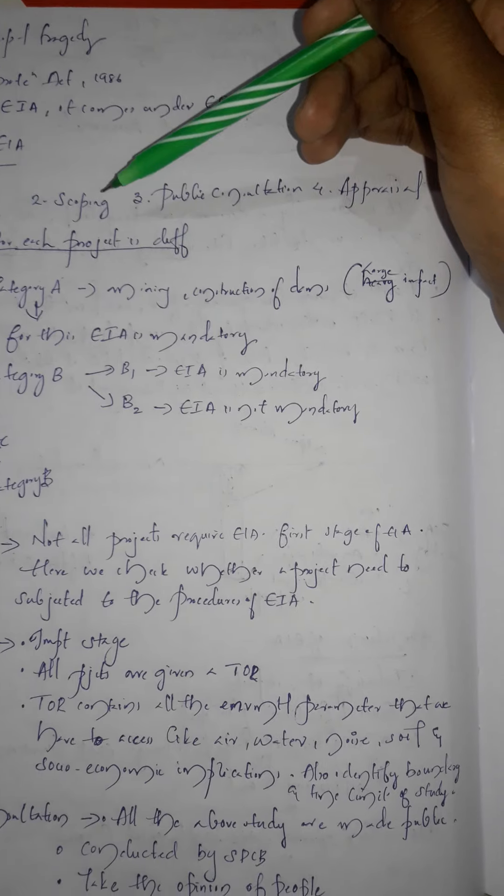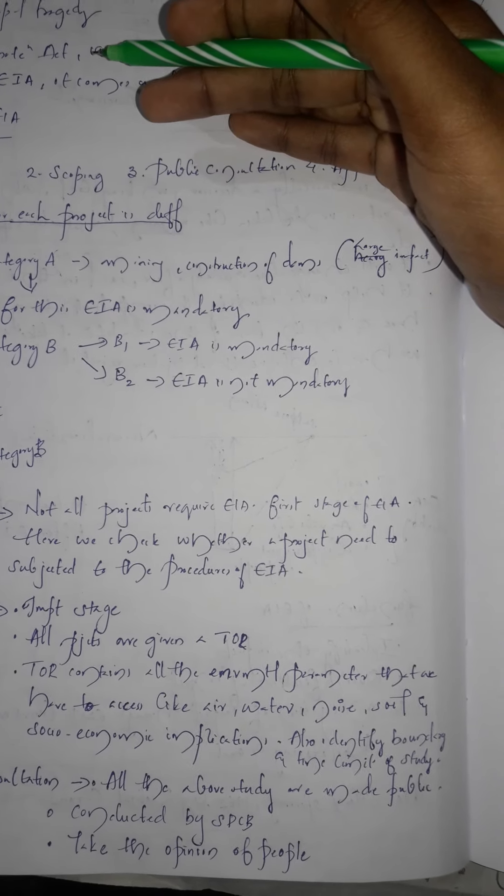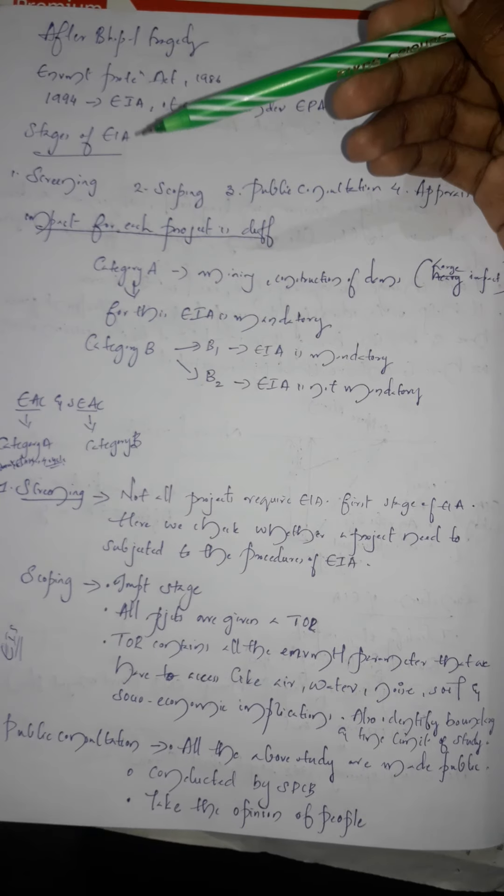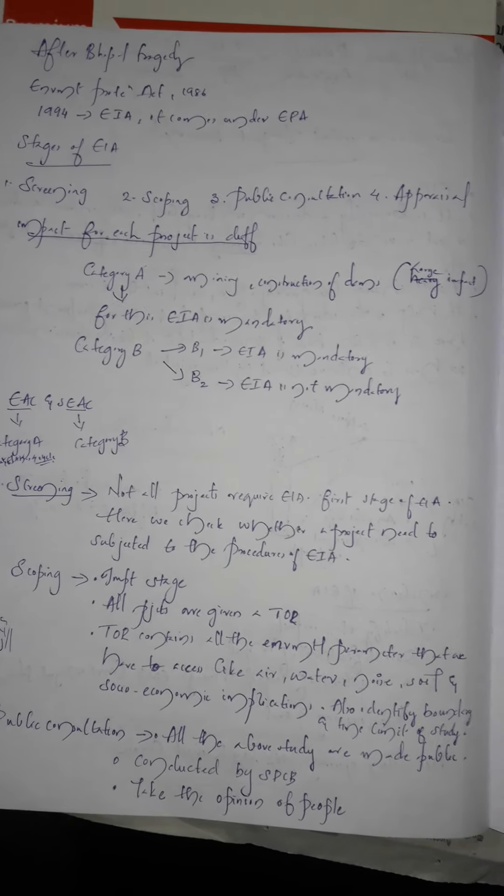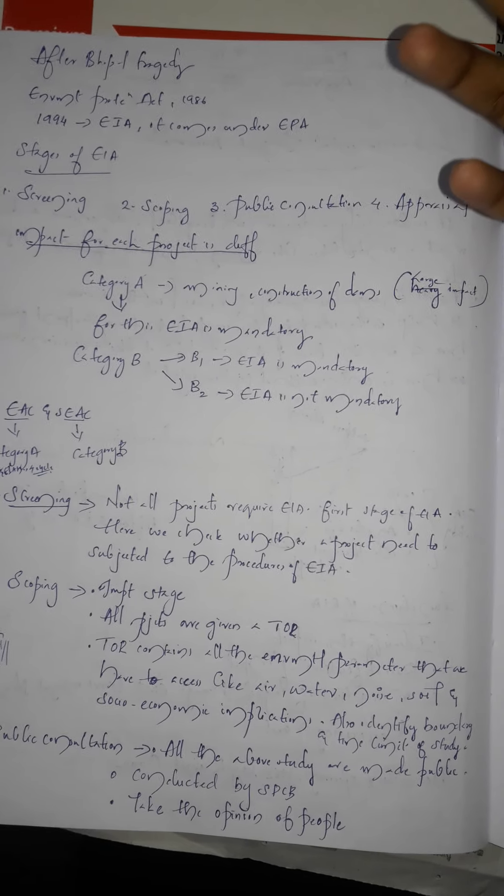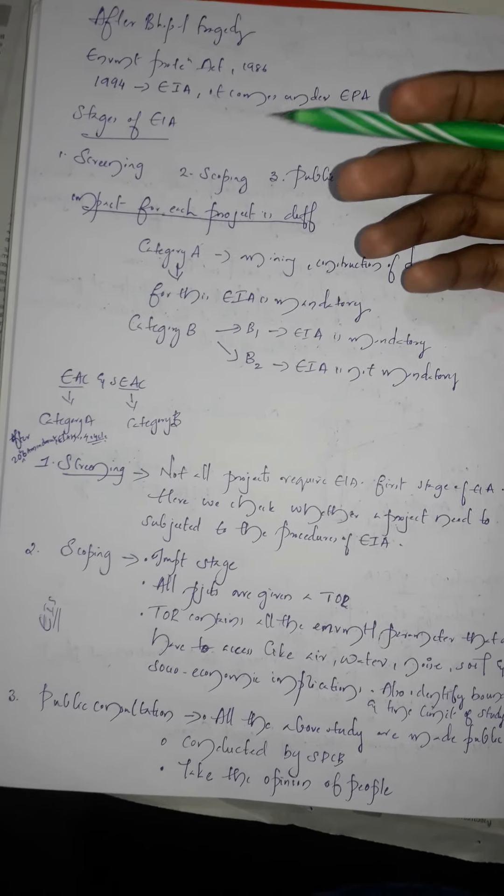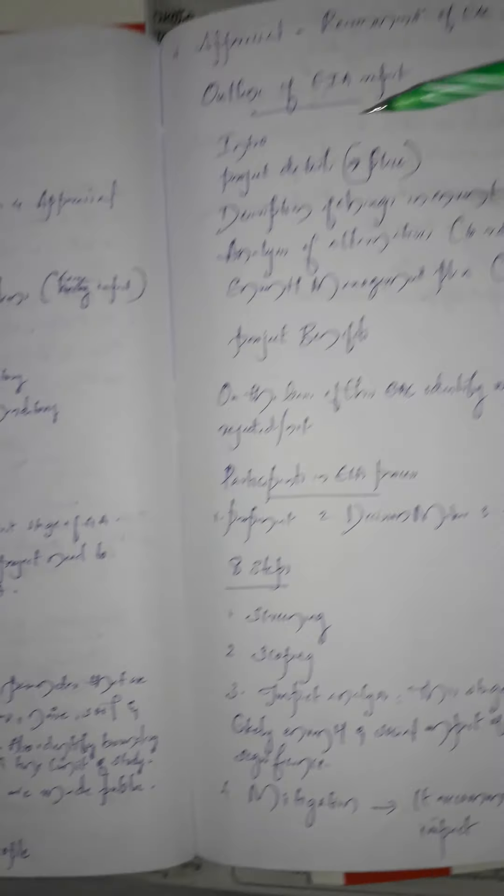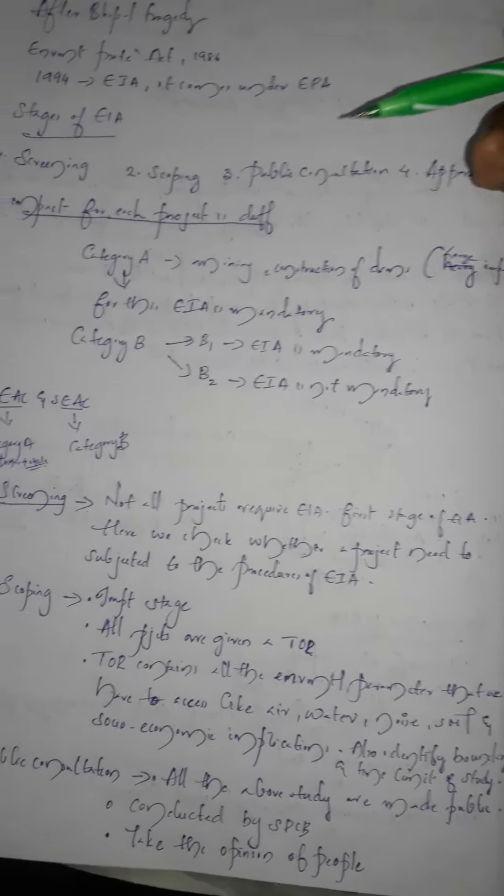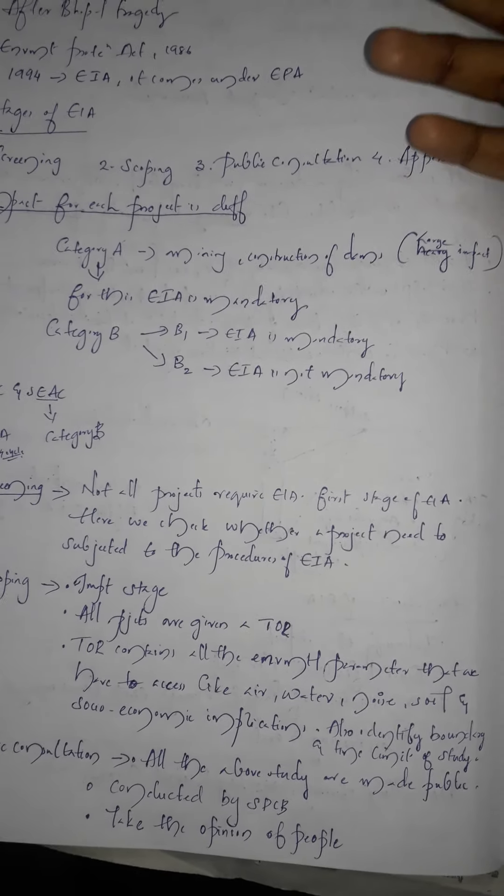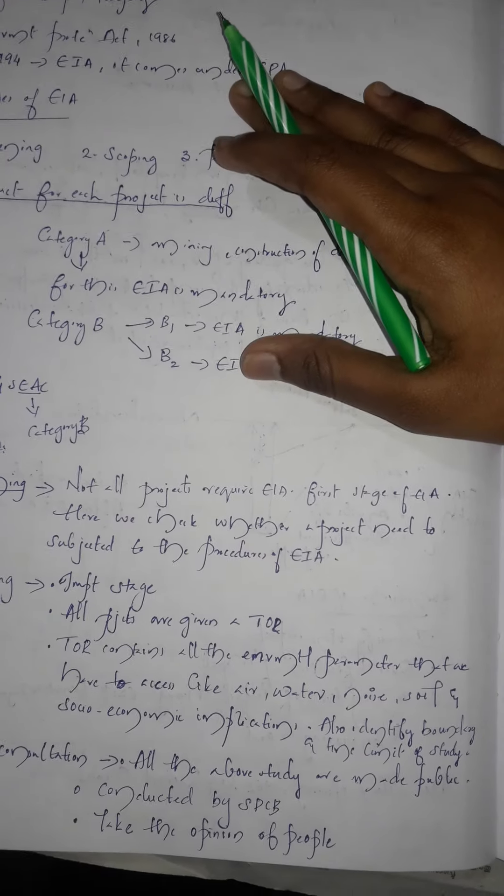Now regarding the stages of EIA - after 2006, amendments were announced. The EIA cycle has mainly four stages: screening, scoping, public consultation, and appraisal. The impacts vary for different items - like mining and other projects have different impacts.